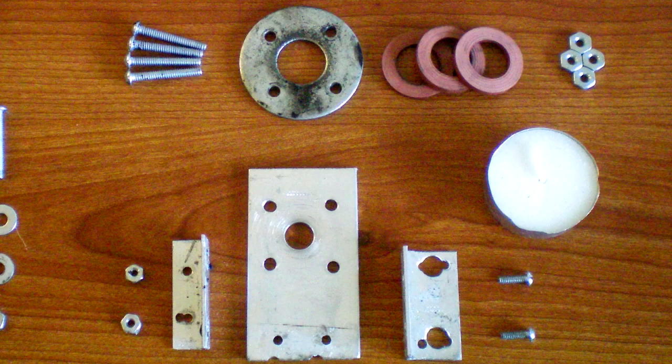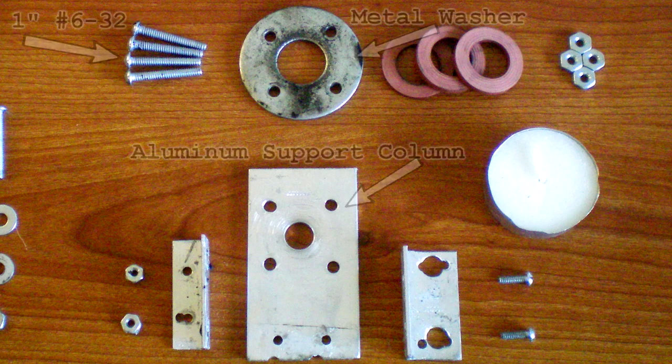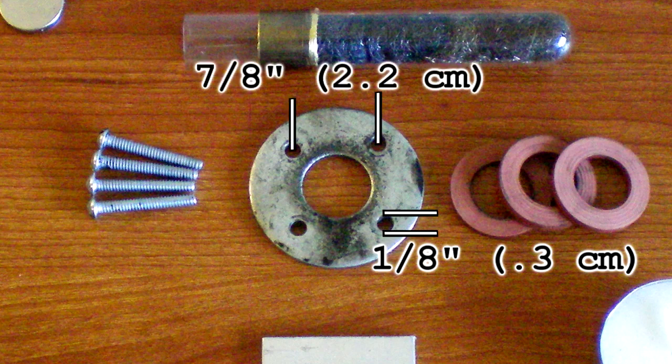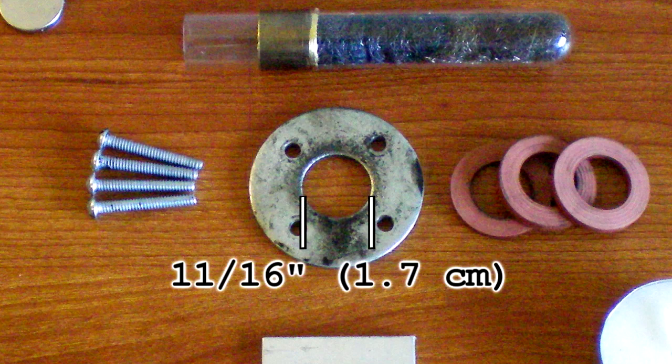The four bolts that run through the aluminum support column and the metal washer are 1 inch long number 6-32 bolts. The four holes that were drilled through the steel washer are 1 1 8th inch in diameter and are 7 8ths of an inch apart from each other. The outer diameter of the washer is 1 and 3 quarters of an inch and the inner diameter is 11 16ths.